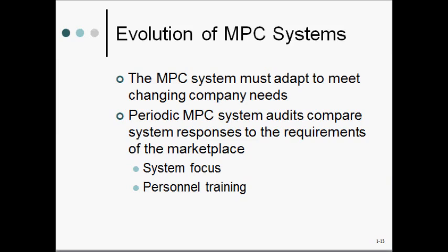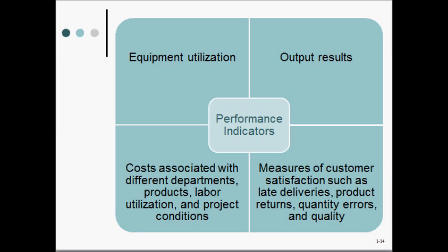There are various performance measures that could be used. We could have equipment utilization as a performance variable, to ensure all machines are utilized at their most optimal level. On the other hand, the indicator could be outputs — the typical productivity of an organization, how many outputs can we produce for the set inputs. We can also focus on the costs associated with different departments, different products, labor utilization, and project conditions — for example, are we using a lot of overtime labor, spending enormous time in a certain department at the expense of overall cost for the product?